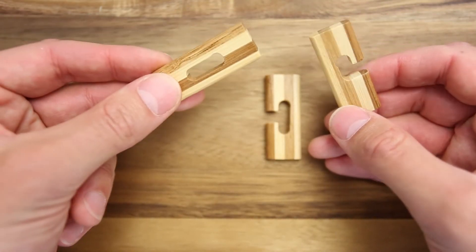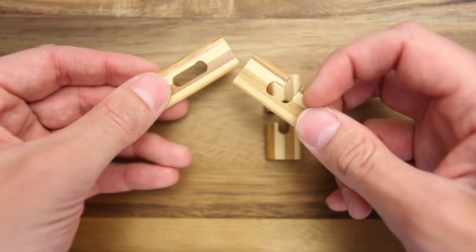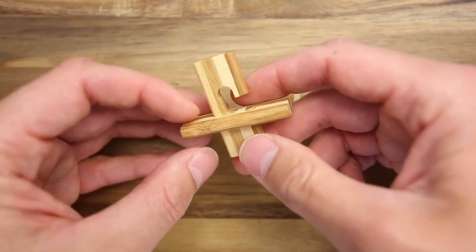First, you have to take this piece with a big notch inside and take this one and put it inside the first piece.